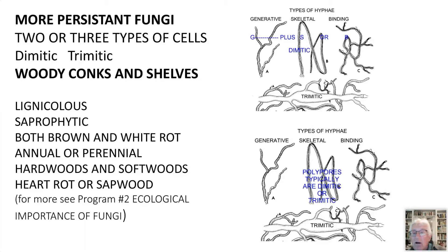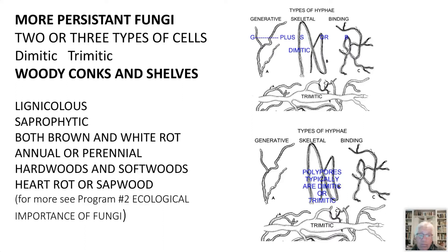As a group, these woody fungi are lignicolous — they grow on wood. They are saprophytic, not mycorrhizal — breaking down the carbon material in the wood. They can do that through either brown rot or white rot. They can be annual or perennial — putting on growth rings every year, retaining them over time. They infect both hardwoods and softwoods, in heart rot and sapwood. The second program of this series dealt with ecological importance of fungi and covered this in great depth, so should any of this interest you, check that archived recording.